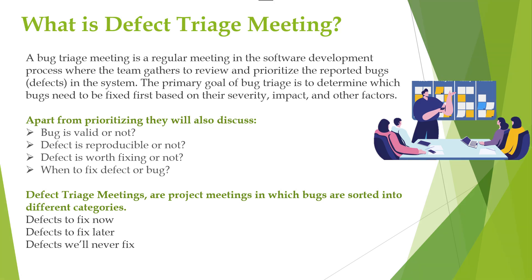In the 'defects to fix later' category, these are defects which can be resolved in later stages. These bugs may cause less damage to the software or application — they are not too harmful, so they can be resolved later.